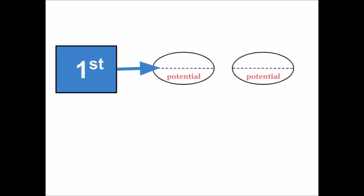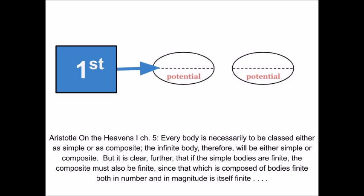Wait, did I say infinite? Is this universe infinitely big? That's our final pop quiz question. What do you think? Every body is necessarily to be classed either as simple or composite. The infinite body, therefore, will be either simple or composite. But it is clear further that if the simple bodies are finite, the composite must also be finite, since that which is composed of bodies finite, both in number and in magnitude. And it took a while, but we were able to show that we were able to prove that the bodies, the dominoes or gears are finite in number. And if the composite is made up of finite numbers of finite things, the composite is also finite.